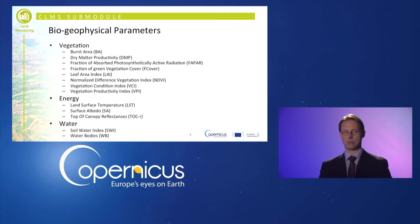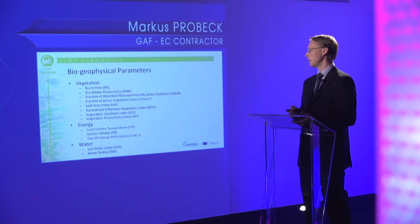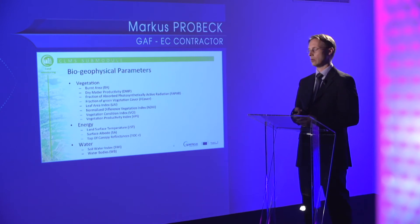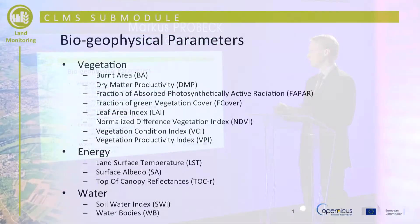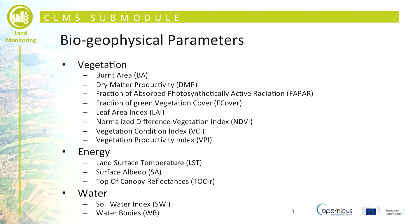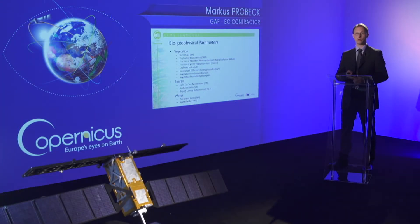In terms of energy, there are products like land surface temperature, surface albedo, and top-of-canopy reflectances. For water, there is currently the soil water index and water bodies. This list of products is expected to be extended by 2019 with more products covering energy aspects, water aspects, and cryosphere aspects — including snow and ice covered areas of the Earth's surface.